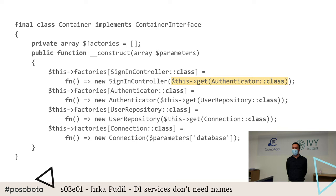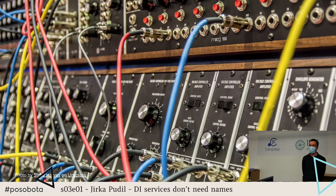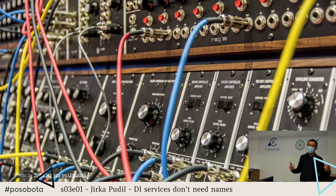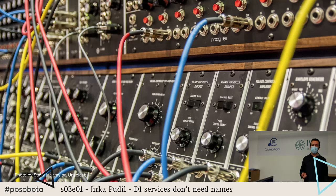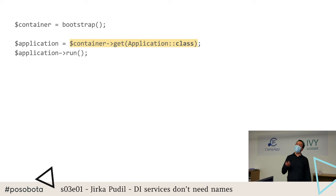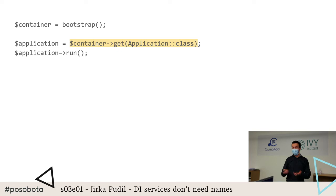You might notice that the container internally uses the service locator approach, but it's okay as long as it is — pun intended — contained there. Because the container is just wiring, just assembly instructions. It's not executive code. In fact, the only place outside of the container where calling the get method is acceptable is in the index.php file — the application's entry point — where you need to create the container itself and get the root of the dependency graph, usually some sort of application instance provided by your framework of choice.